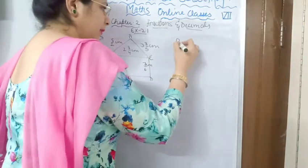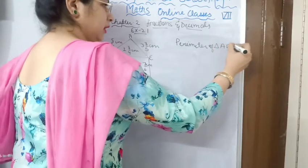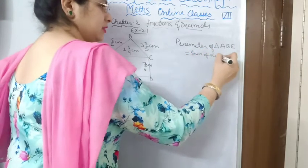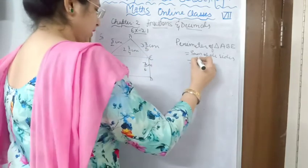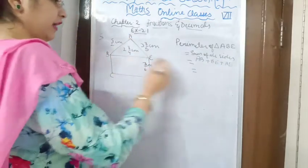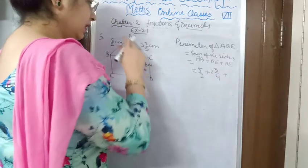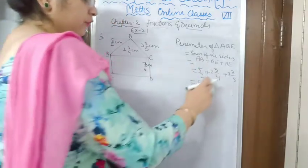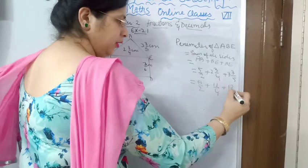First, we will find the perimeter of triangle ABE. The perimeter of a triangle is the sum of all sides: AB plus BE plus AE. AB is 5 upon 2, BE is 2 and 3 upon 4, and AE is 3 and 3 upon 5. Convert the mixed fractions to improper: BE becomes 4 times 2 plus 3 = 11 upon 4, and AE becomes 5 times 3 plus 3 = 18 upon 5. Now take the LCM of 2, 4, and 5.